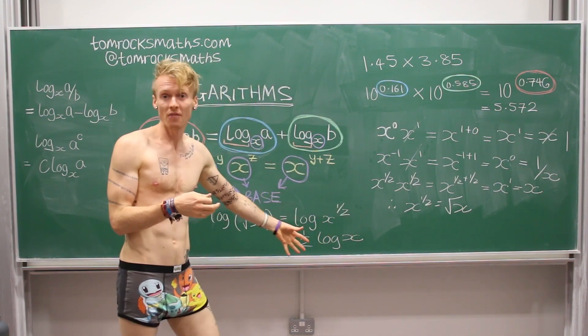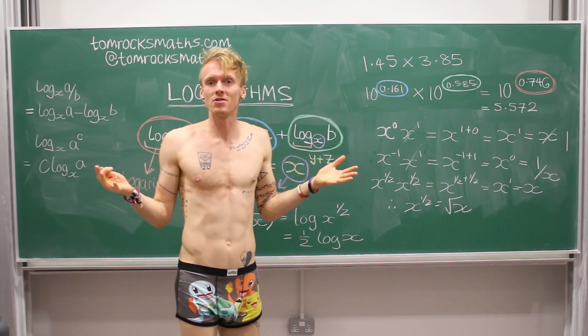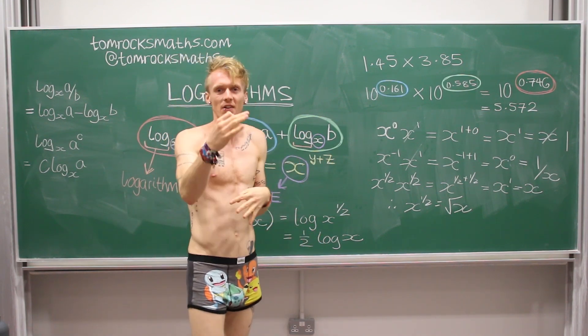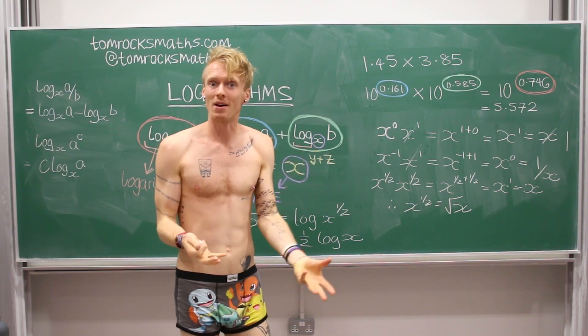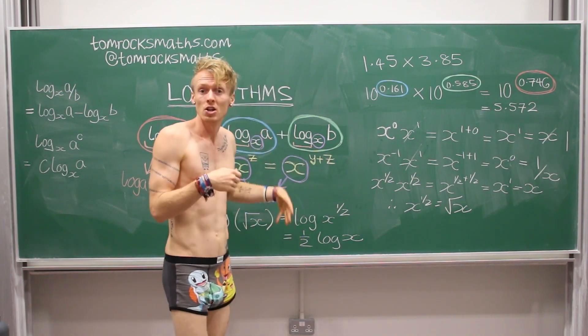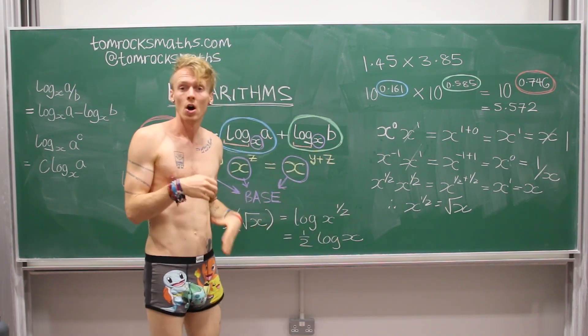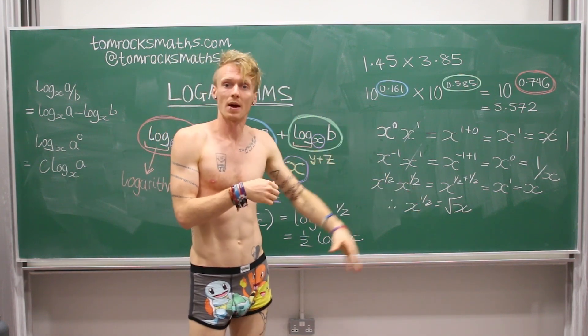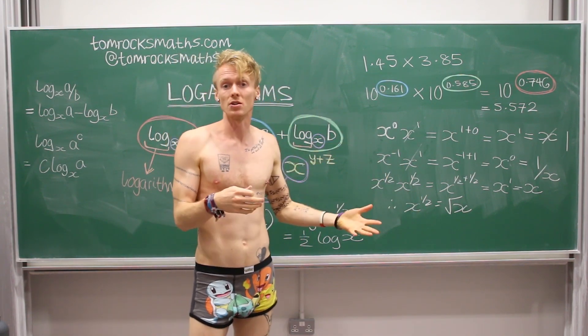It's so much easier to half a number than it is to work out a square root. And it's the same with cube roots, where this would be a third or for fourth roots, where this would be a quarter. And this pattern continues. And it just meant that working out very involved calculations involving roots of numbers suddenly became really simple.